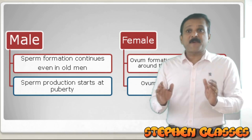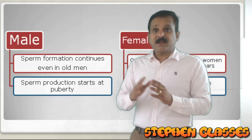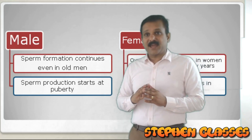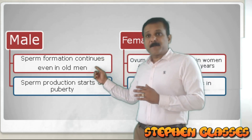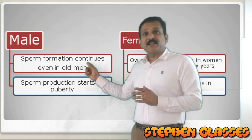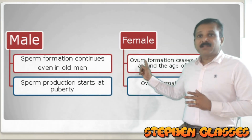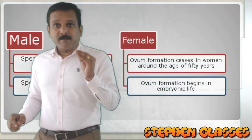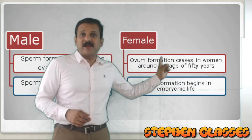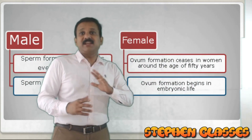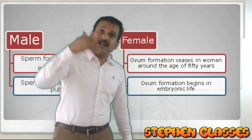There is a difference between the reproductive events happening in male versus female. In the case of male, sperm production or spermatogenesis will continue even in old age. Whereas in the female, the formation of the ovum will stop when menopause happens — when the menstrual cycle stops. Ovum formation stops in women around the age of 45 to 50. But in the male, sperm production will continue even in old age.